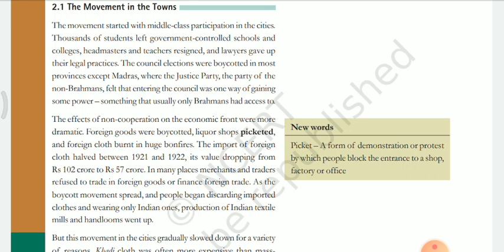In Madras there was a political party named the Justice Party. The Justice Party was formed by non-Brahmins, and they felt this was their opportunity for political empowerment — to show India that non-Brahmins are just as capable as Brahmins. So the Justice Party did not boycott the council elections. Everywhere else in India, the council elections were boycotted.